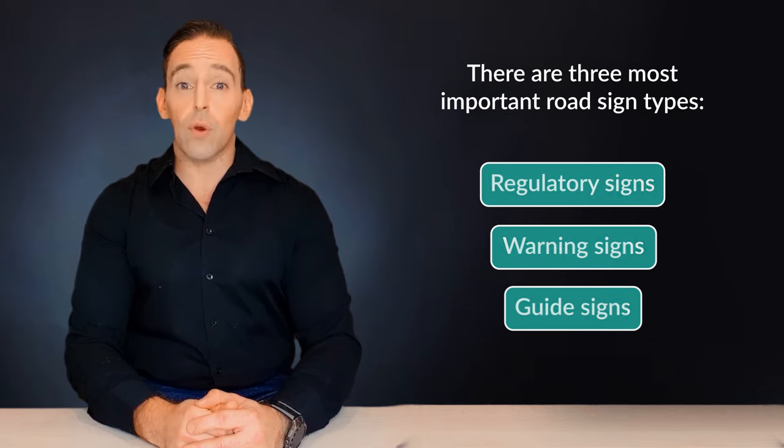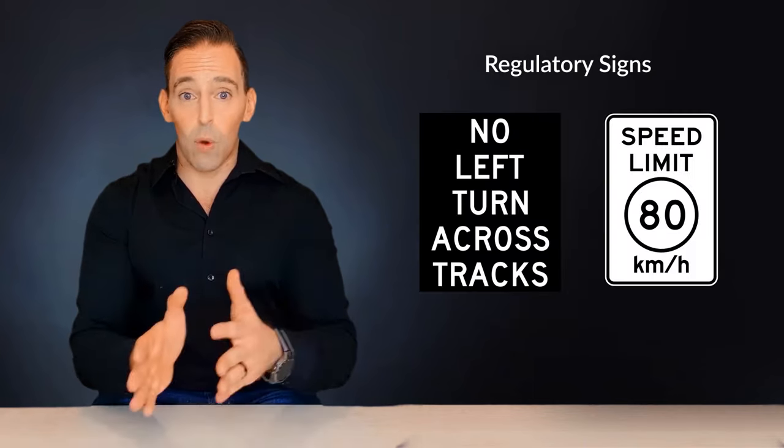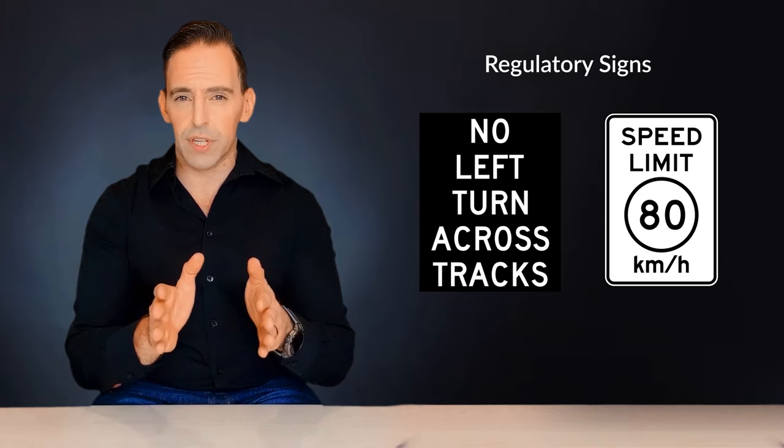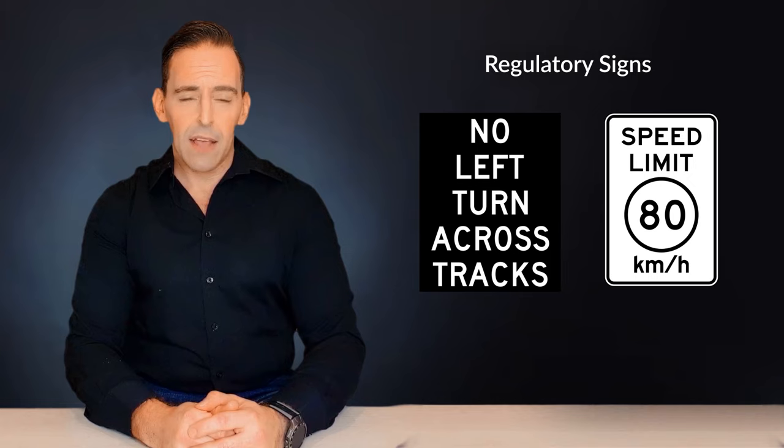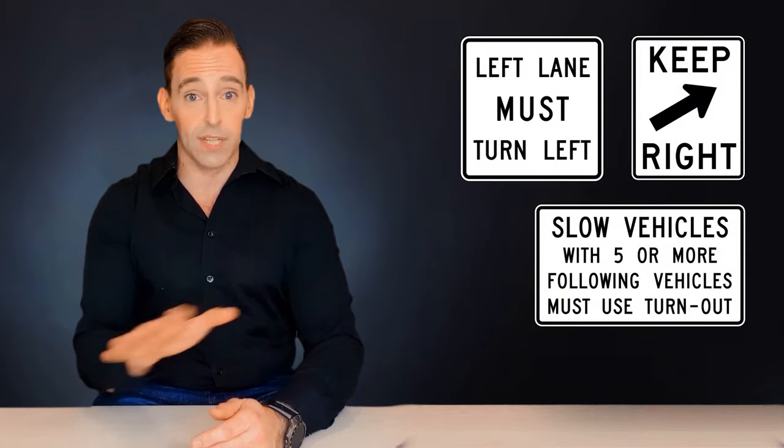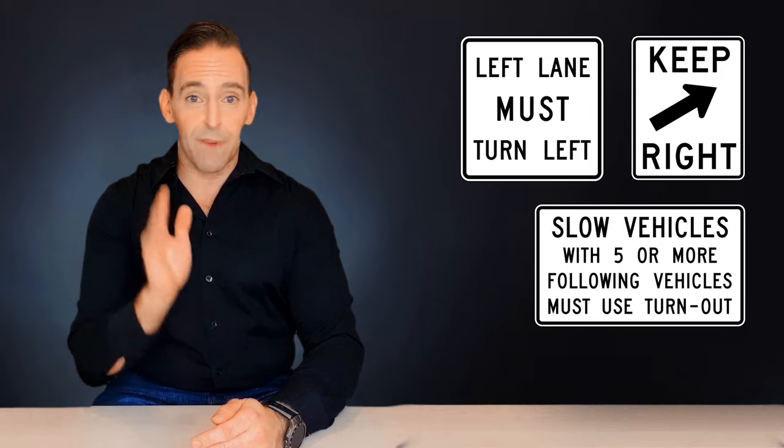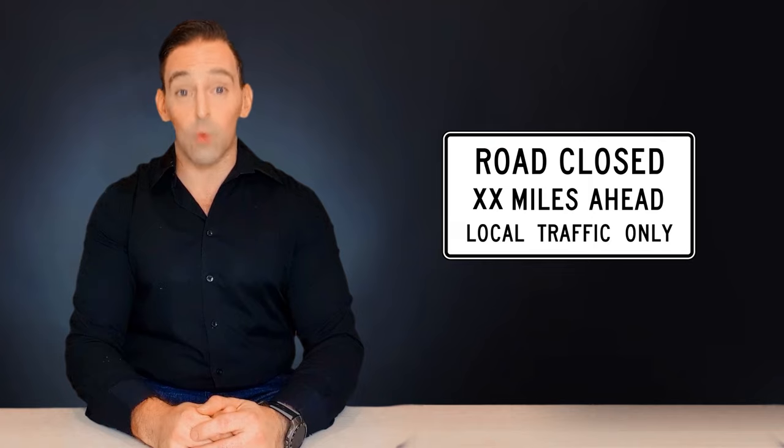Let's start with regulatory signs. Regulatory signs are black or white and are meant to remind motorists about traffic laws that exist on the current street. These types of signs come in several shapes and are usually enforced at all times, meaning that they must be followed. Some examples are speed limit signs, road closure signs, and one-way signs.